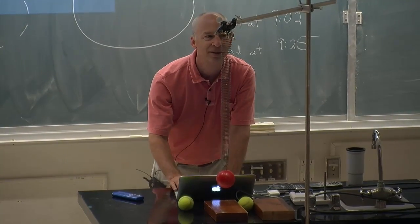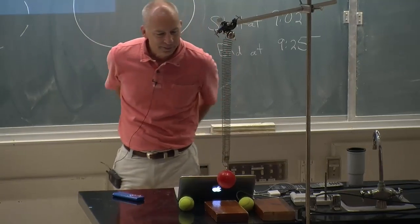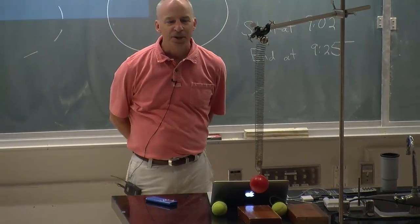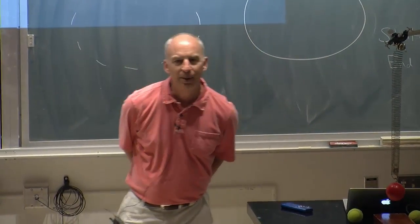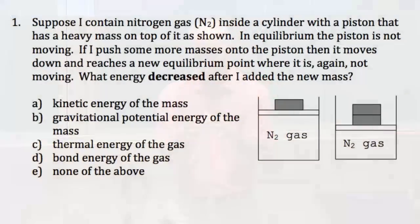Any questions about? Suppose I contain N2, nitrogen gas, in a cylinder with a piston on top and the piston is held down by a mass. So that's a cross section. It's meant to be a cylindrical thing with a piston in the top. So it's like a syringe.